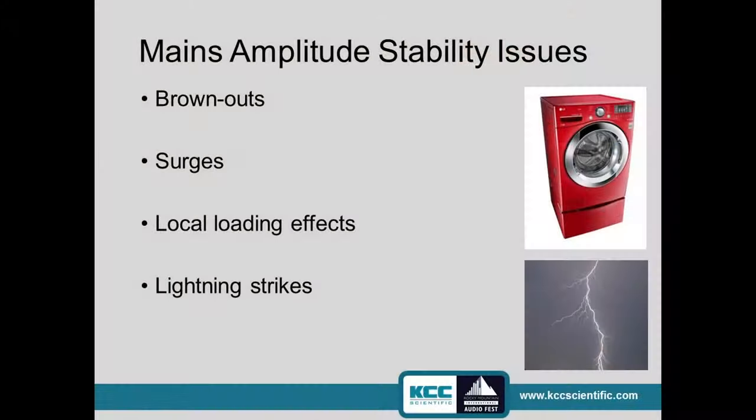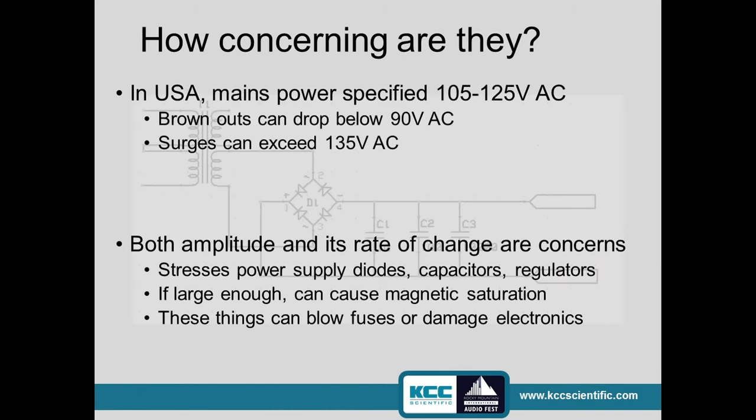Let's jump over and talk about amplitude issues. These I think are a lot more familiar — we know about brownouts and surges, local loading effects. Something happens next door, something happens in a factory or even in your own home: an appliance turns on, the voltage changes, and that could cause problems. Or you can get a lightning strike — you want to talk about a real amplitude stability issue.